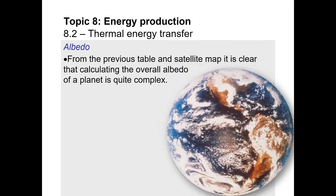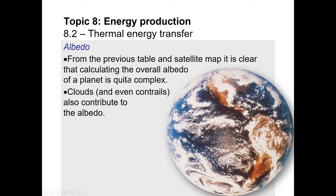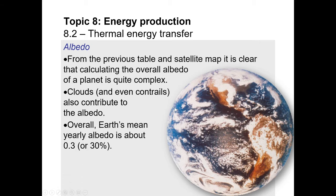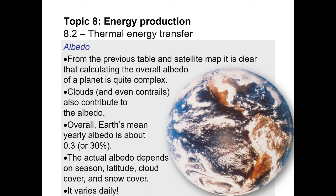What you saw on the previous slide shows that it's quite difficult to figure out the albedo of a planet. There are many factors contributing to it — not just vegetation and seasons, but also clouds and even contrails. A contrail is the trail of condensed water from an aircraft or rocket at high altitude, and these also contribute to albedo. On average, Earth's albedo is about 30%, and every day that value changes based on latitude, season, and what's on the surface.